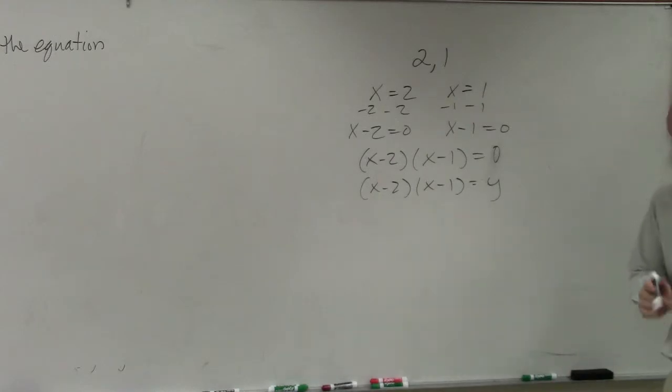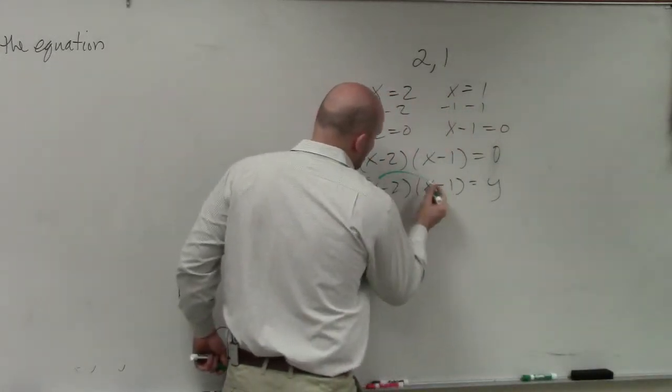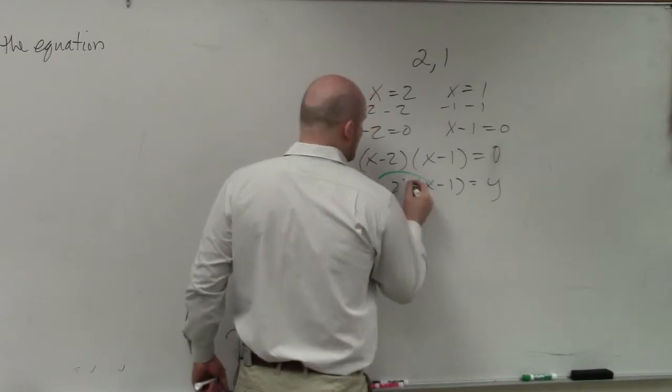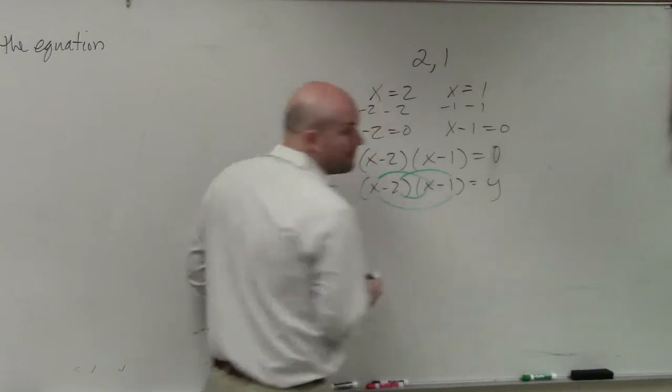So now we need to multiply these. So you can apply FOIL. FOIL tells us to multiply our first terms, multiply our last terms, inner, inner, outer. Right?